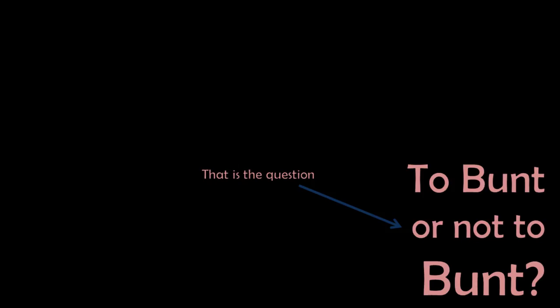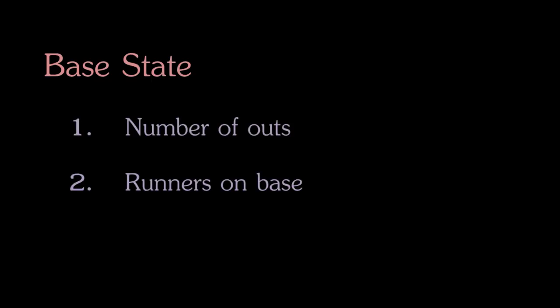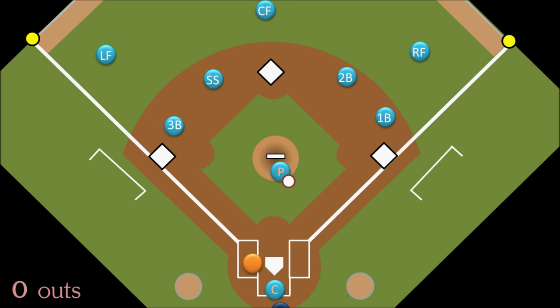Every point in a baseball game exists in one of 24 base states. It's not as complicated as it sounds. Base states are comprised of two things: the number of outs there are and which bases there are runners on. When the inning starts, for example, we have no runners on base and zero outs — that's our first base state. The leadoff guy hits a single, meaning there is now a runner on first base and nobody out — that's a second base state.